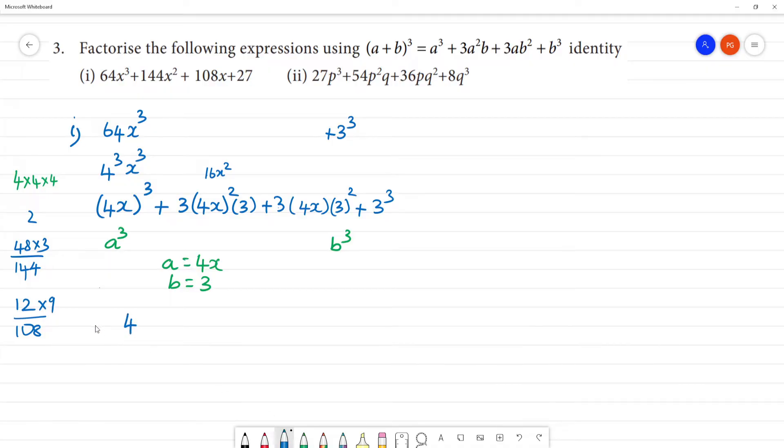So the first one is (4x+3)³. What are the factors? This is (4x+3)(4x+3)(4x+3). These are the factors.